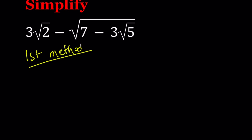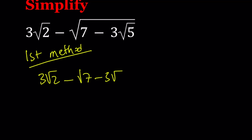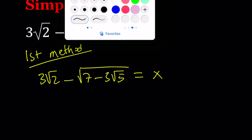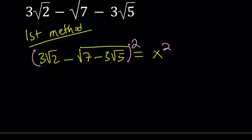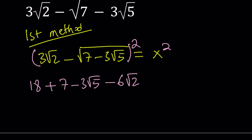Our first method basically involves setting this equal to something — let's call this x — and then squaring both sides. When we square both sides, we have something that looks like a minus b, so let's use the formula. a squared is going to be 18, plus b squared, which is going to get rid of the radicals, minus 2ab. That's going to be 6 root 2 multiplied by square root of 7 minus 3 root 5, and that is going to equal x squared.